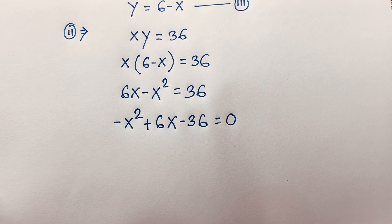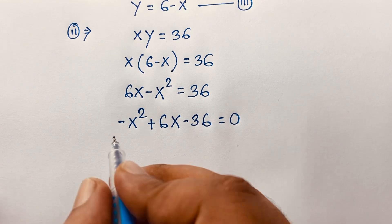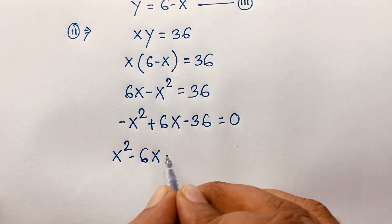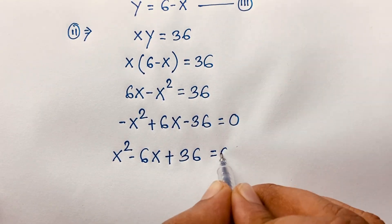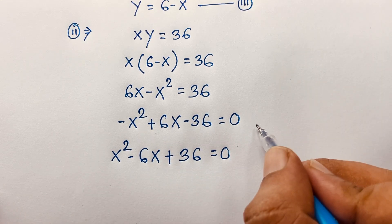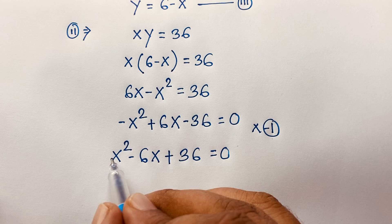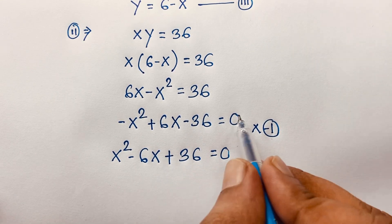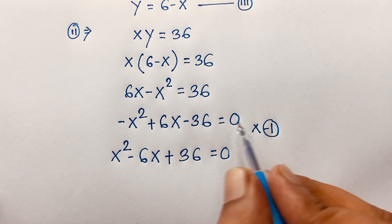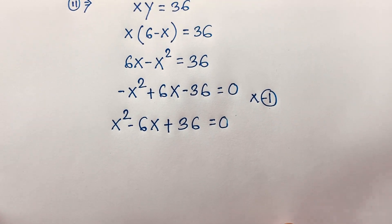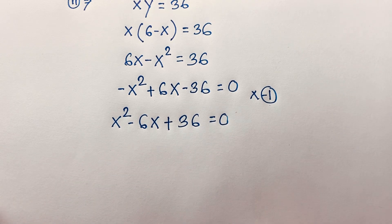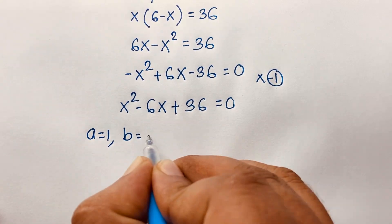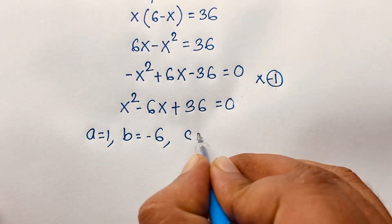Multiplying both sides by negative 1, we get x squared minus 6x plus 36 is equal to 0. This is a nice quadratic equation, where a equals 1, b equals negative 6, and c equals 36.